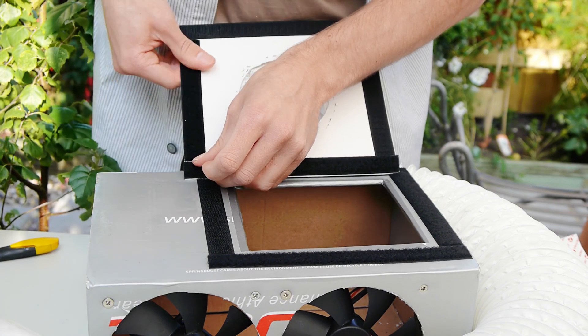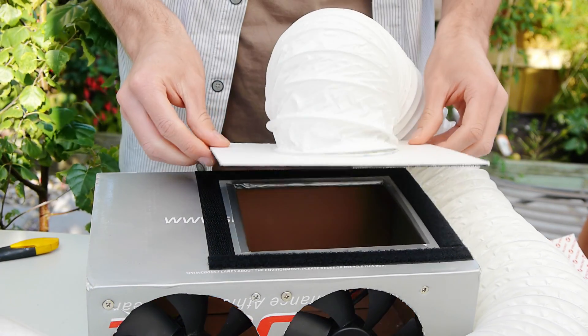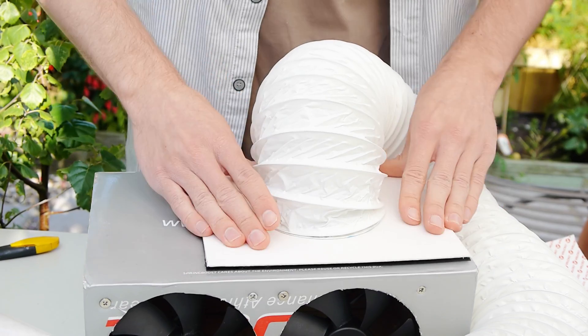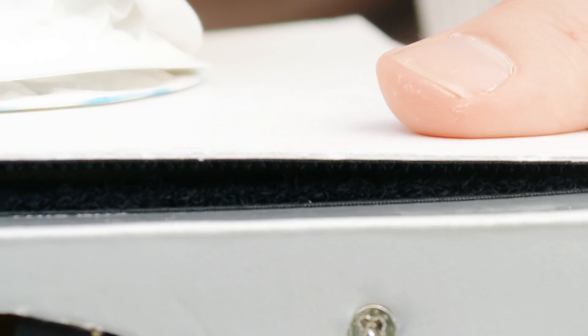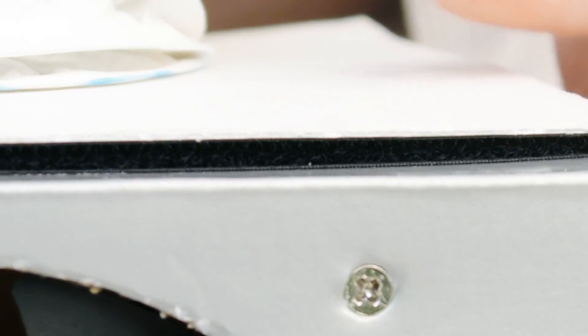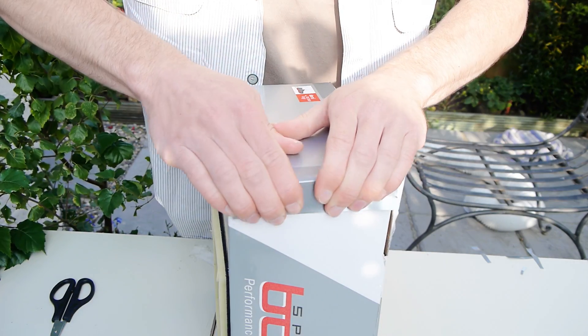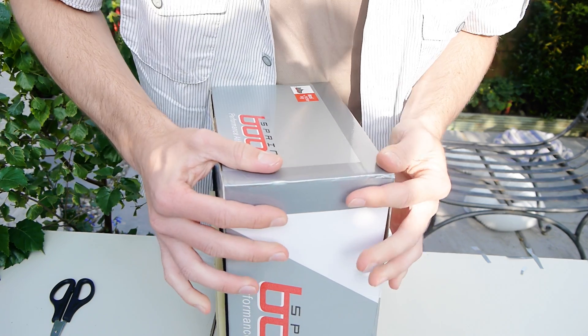Now it's just a case of adding some velcro to the box and the cardboard cutout. To make a good seal, we can also add some thin strips of sponge, which should stop any air from being blown through the gap. Whilst we're at it, we might as well seal all the edges of the box with some duct tape as well.